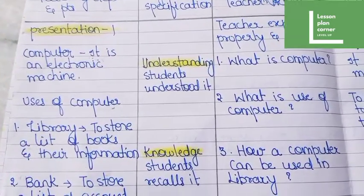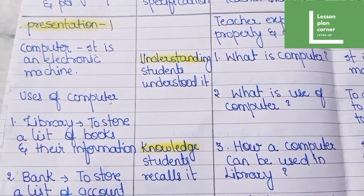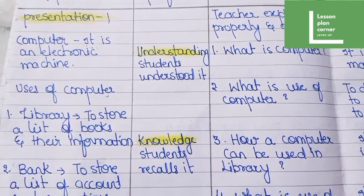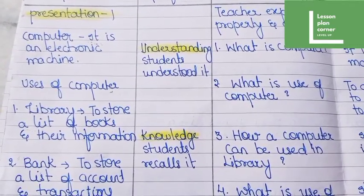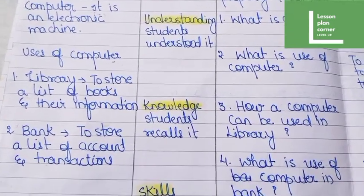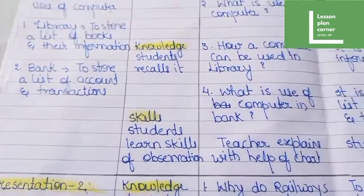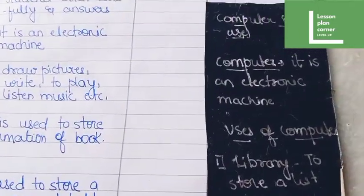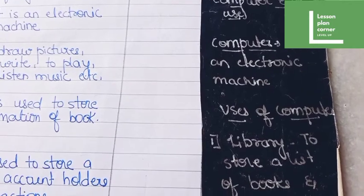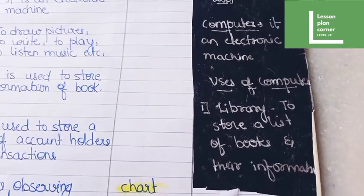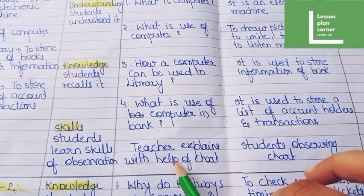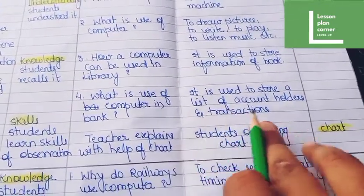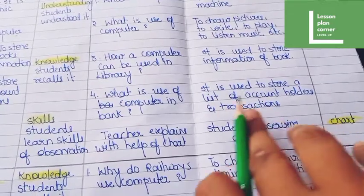Here you can see Presentation 1. We also have to explain everything to students. Here you can see the definition of computer, use of computer in library and bank. And like this we have to mention everything. Here you can see skills and blackboard work. On the blackboard we have to write the definition of computer and the uses of computer. The teacher explained with the help of a chart, and students are observing the chart.